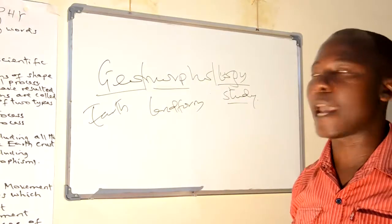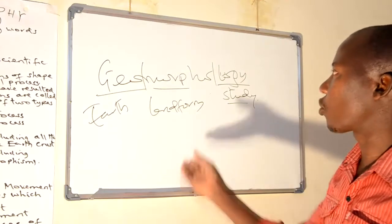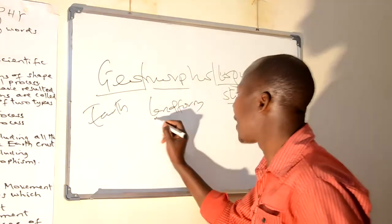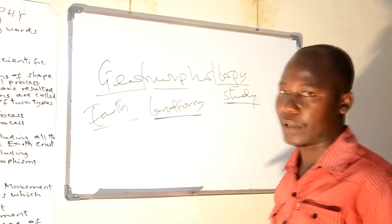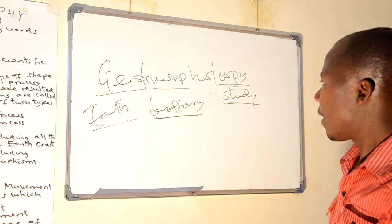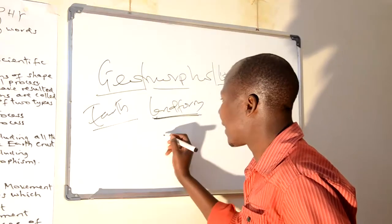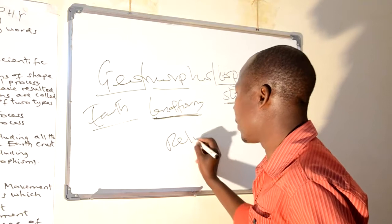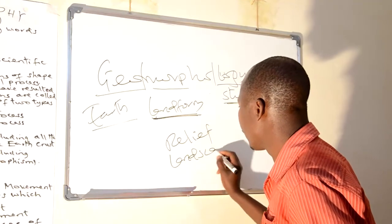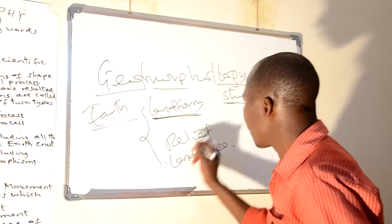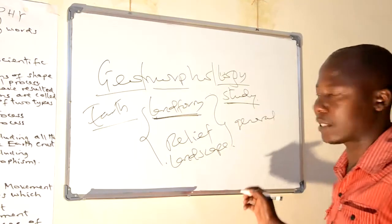Therefore, geomorphology refers to the study of landforms on the earth surface. Whenever we talk about geomorphology, this is the study of landforms on the earth surface. Because this is the study of landforms on the earth surface, landform is likely to the words 'relief' and 'landscape'. All of these terms mean the general appearance of the earth surface.